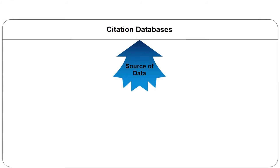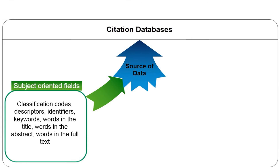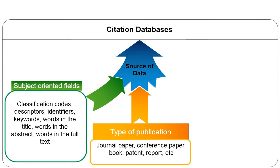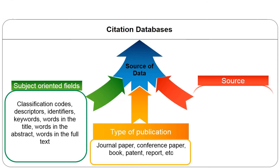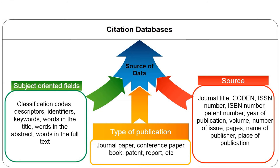Earlier bibliometric studies use different data elements for their analysis. These include subject-oriented fields such as classification codes, descriptors and identifiers; type of publication such as journal paper, conference paper, book or patent; and source fields such as journal title, CODEN, ISSN number and so on.